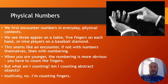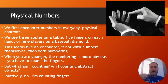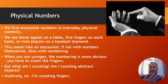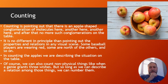First of all, we do encounter numbers in everyday physical contexts all the time — three apples on a table, five fingers on each hand, nine players on a baseball diamond. Of course, the five fingers are not the number five itself, but at least it's an encounter with numbering, with the act of numbering. And when you're a little kid this was much more obvious — you see a bunch of fingers and actually have to count them: one, two, three, four, five. When a child counts their fingers, are they counting abstract objects? Obviously not — they're counting fingers.